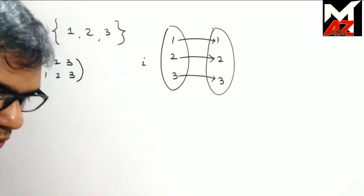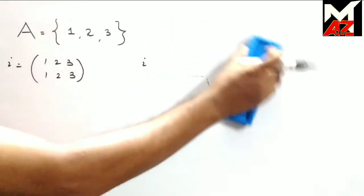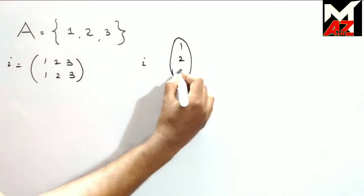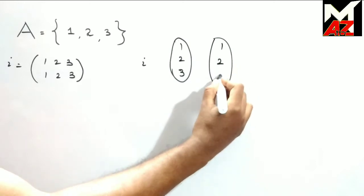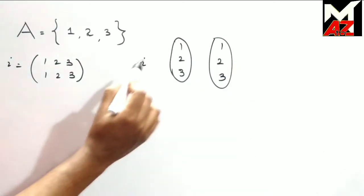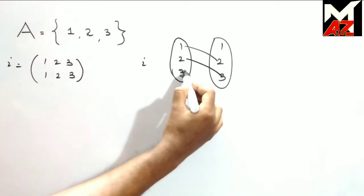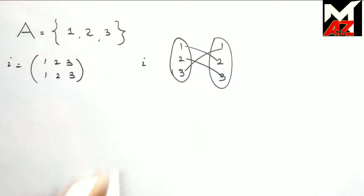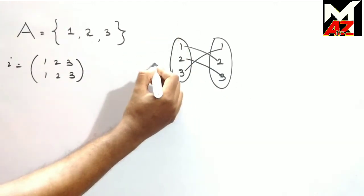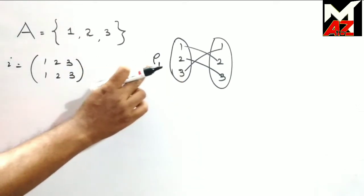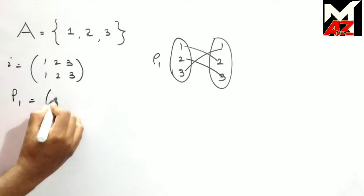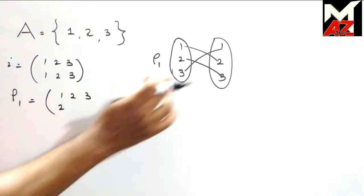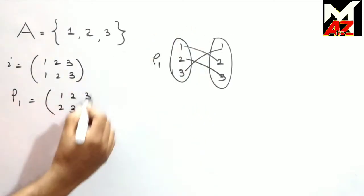We consider the second bijective mapping as ρ1. ρ1 can be written as (1 2 3 / 2 3 1) — that is, 1 goes to 2, 2 goes to 3, and 3 goes to 1.